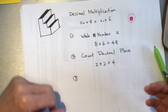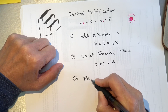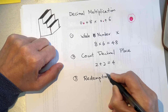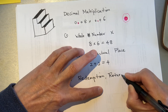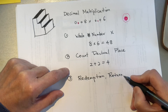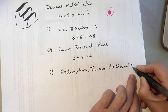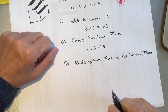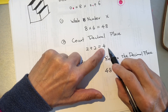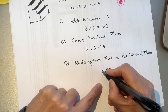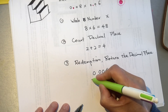Step 3: Return your decimal debt — I call it redemption, or 'put it back.' Return the decimal places back to your result. We have 4 decimal places to return, so in 48 we count 1, 2, 3, 4 and place the decimal point. The result is 0.0048. That is our glorious result!